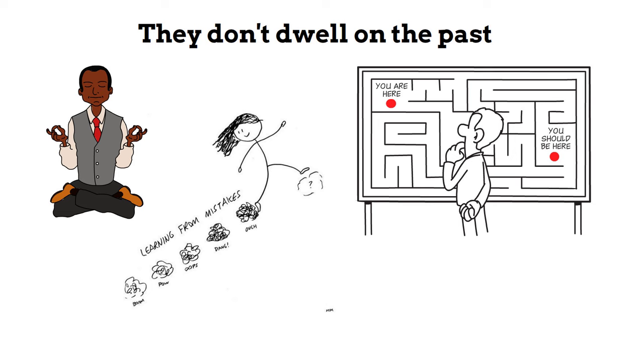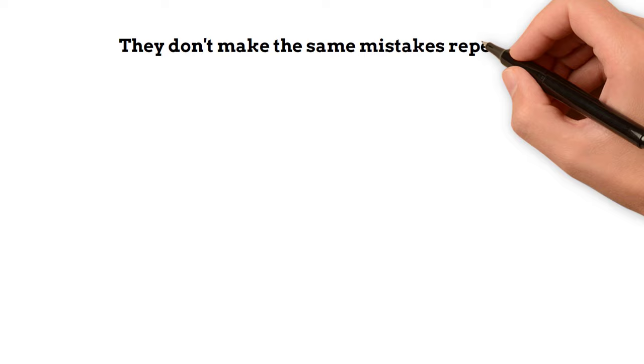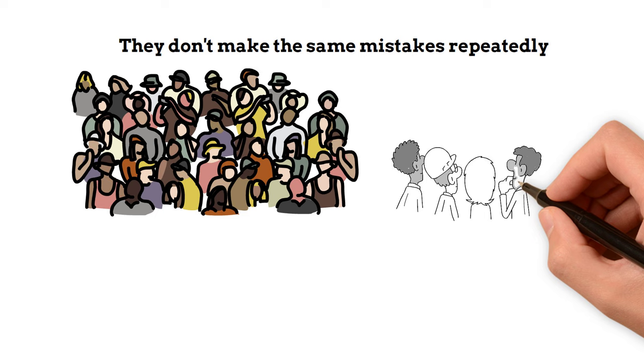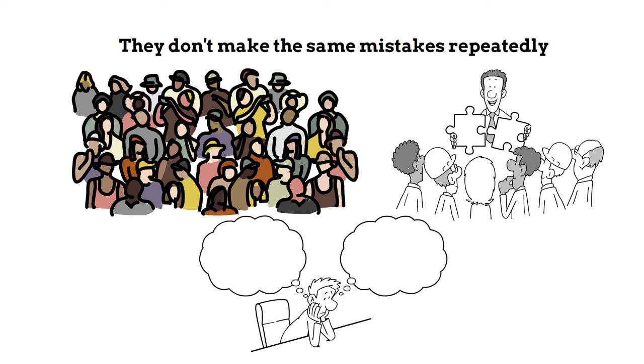Six: They don't make the same mistakes repeatedly. Everyone makes mistakes, but mentally strong individuals take responsibility for their actions and learn from them. Think about a mistake you made recently. What did you learn from it, and how can you prevent it from happening again?